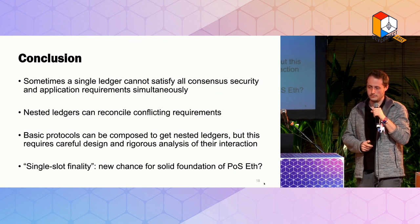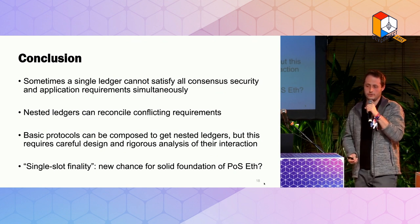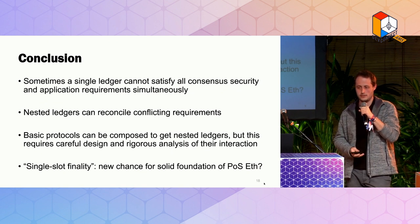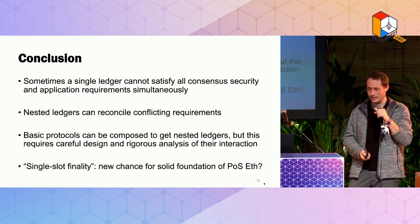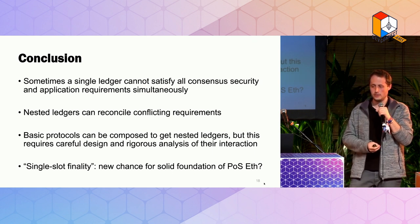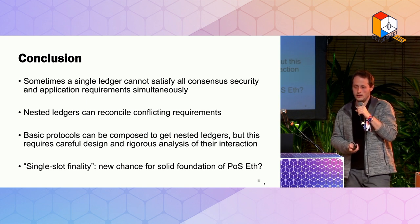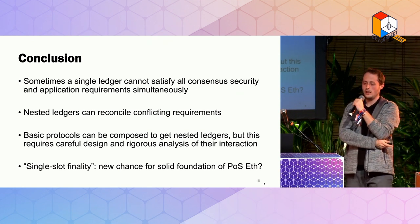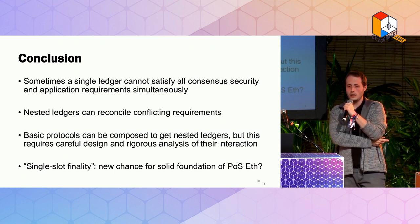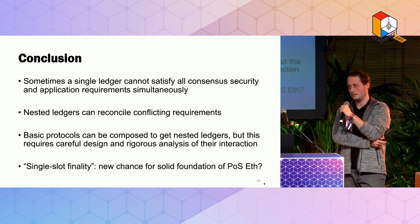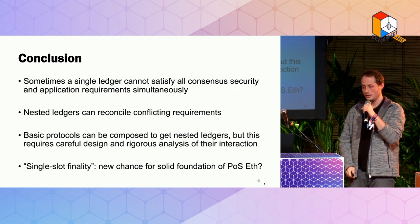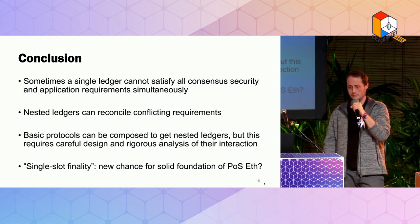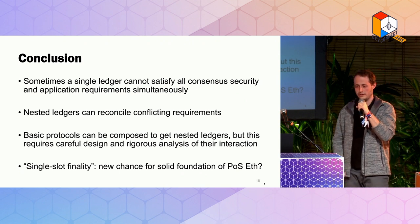Let me conclude. Sometimes you may realize that a single ledger protocol cannot satisfy all the consensus security and application requirements you want. In that case, nesting ledgers can help reconcile these conflicting requirements. There are basic constructions — compositions of basic protocols — that help you implement such nested ledgers, but you need to be careful to rigorously analyze how the constituent protocols interact. Finally, there has recently been more talk about single-slot finality, and I hope this gives us a new chance to come up with a more solid foundation for proof-of-stake Ethereum. Thank you.